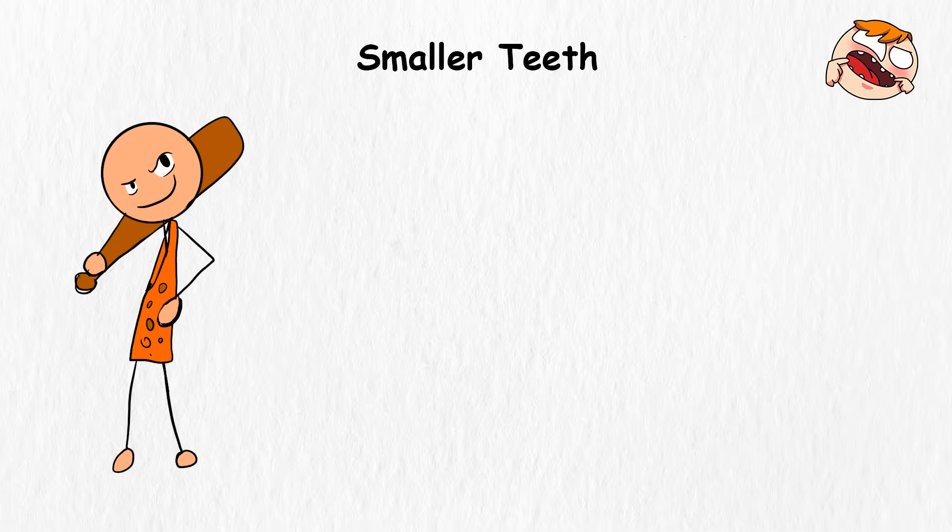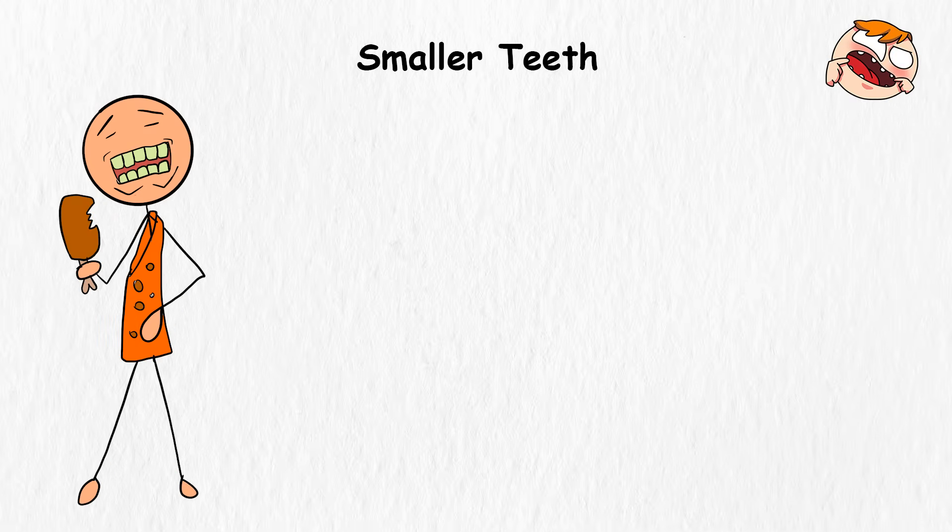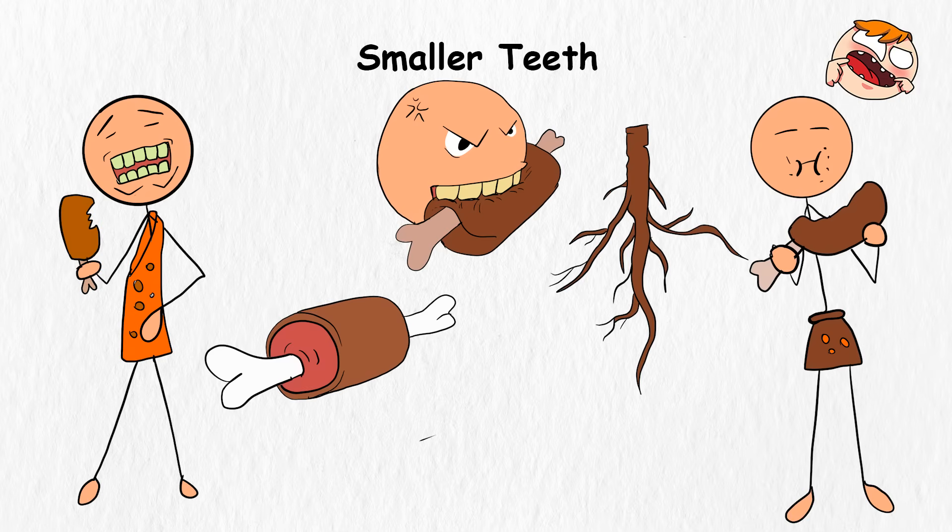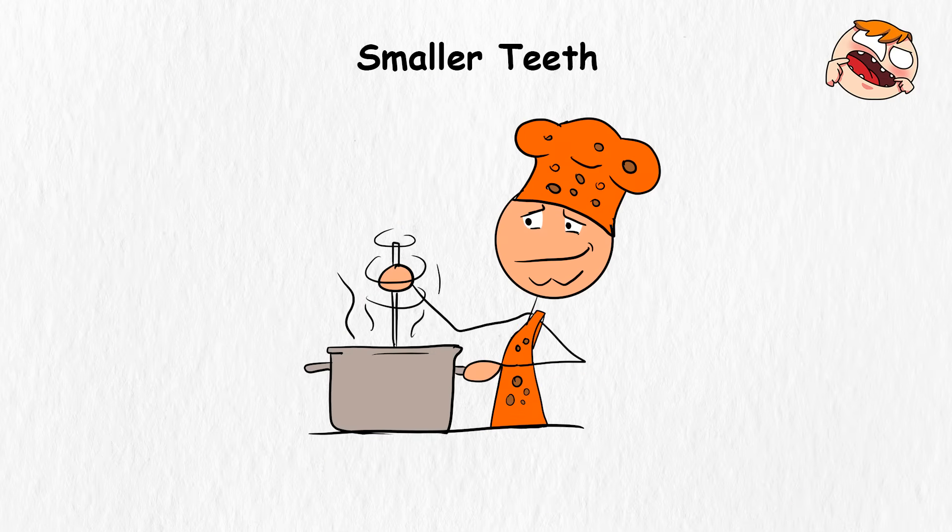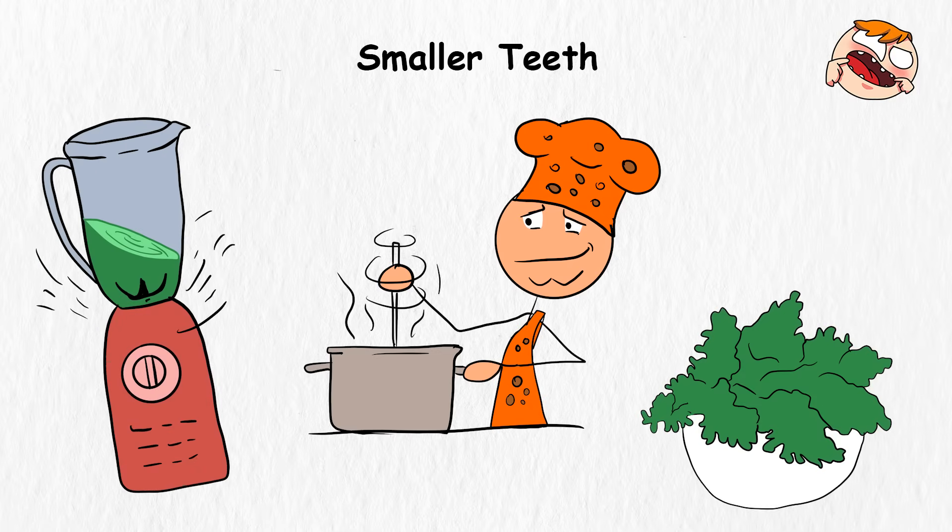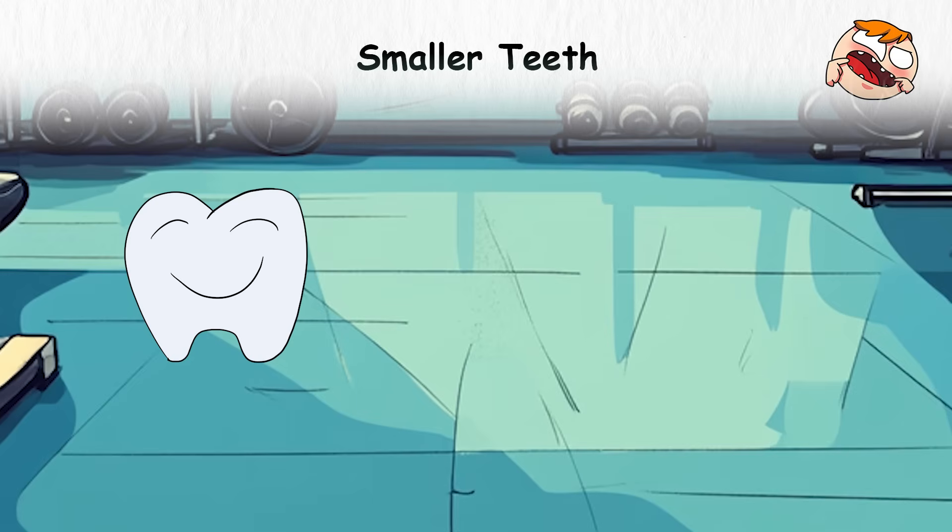Smaller teeth. During the cavemen era, humans had huge, big teeth because our ancestors needed the tough chompers to chew through raw meat, roots, and other prehistoric snack packs. But thanks to cooking, food processors, and people who blend kale into smoothies, you barely give your teeth a workout.